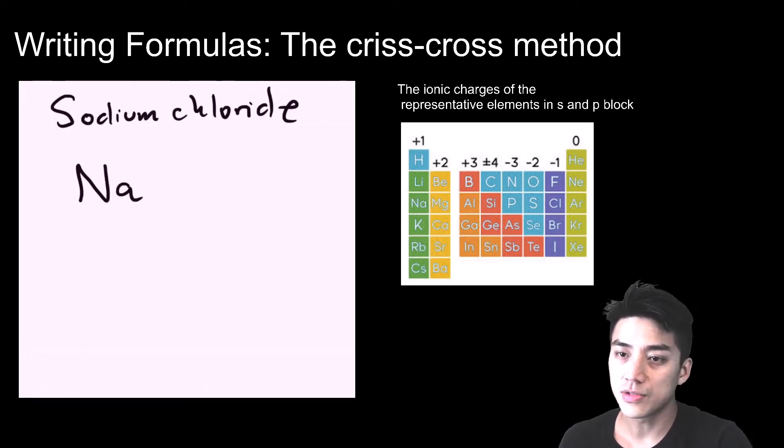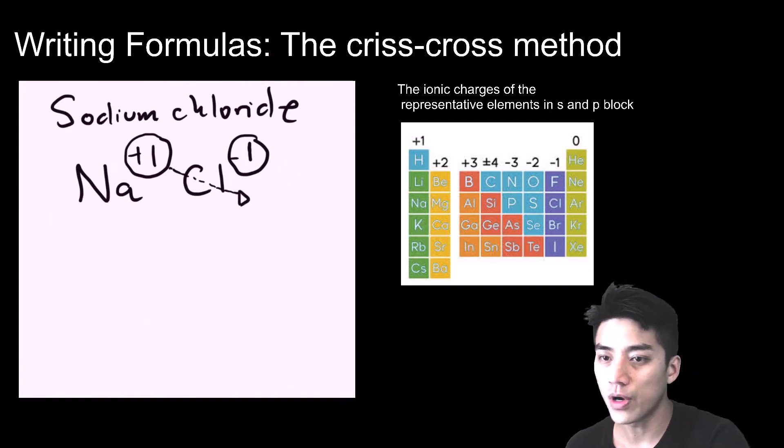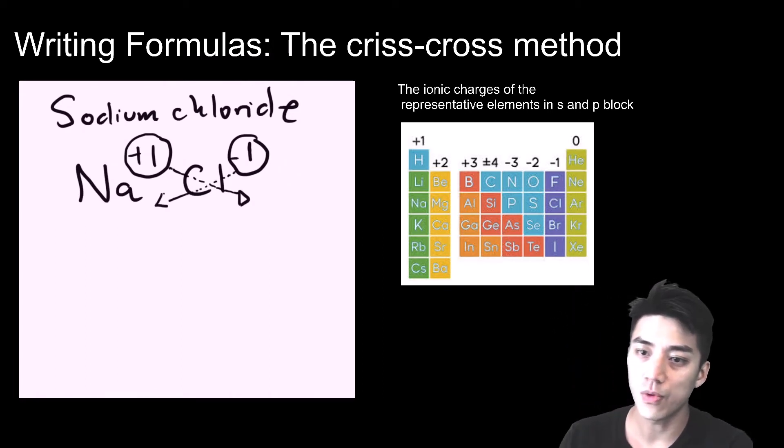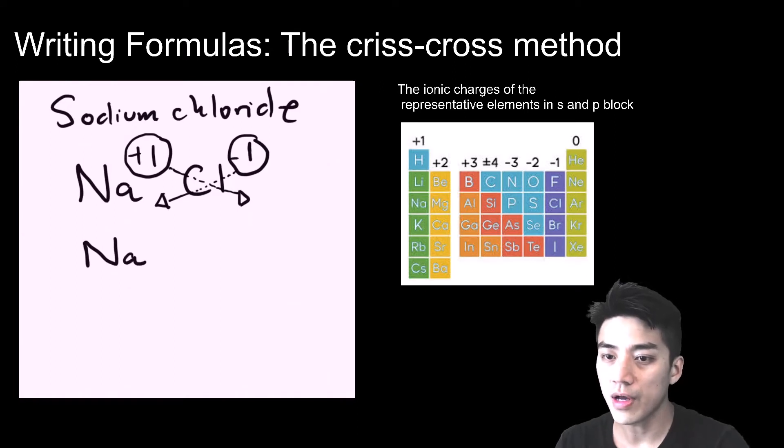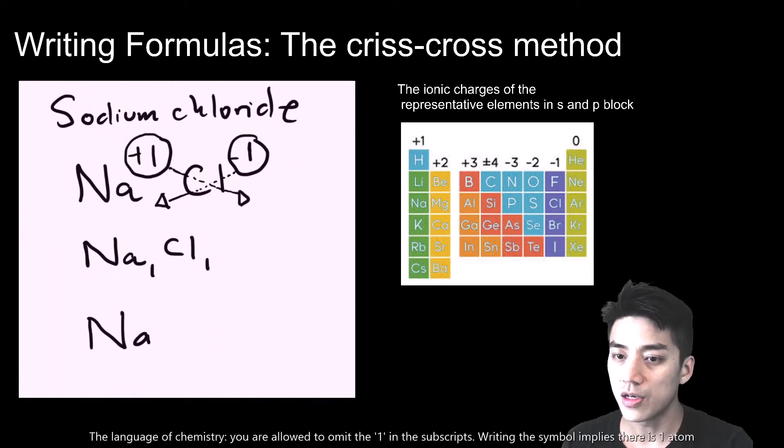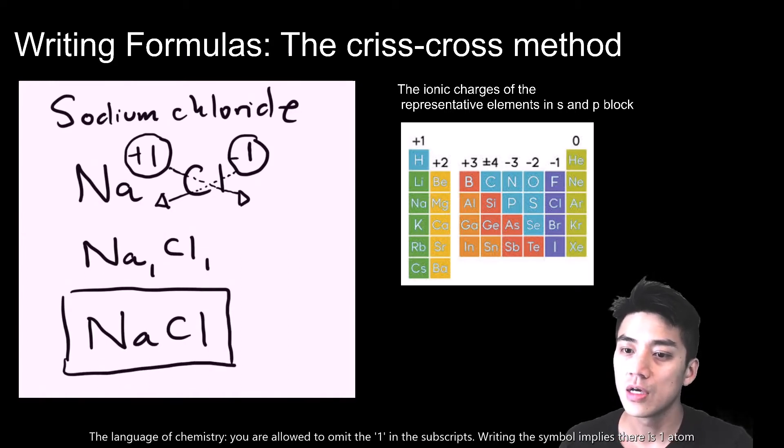Let's see this in action so that it's really clear. Sodium chloride: write out the formula, Na is a plus one charge, chlorine is a negative one charge, and now I just criss-cross. I'm gonna bring the one over to chlorine, I'm gonna bring the negative one over to sodium and now I rewrite their subscripts, ignoring their signs. It just becomes Na1Cl1 but then in chemistry remember you can omit the ones. It's the language of chemistry, so chemists get really lazy and we just omit the ones because it's implied. So we have Na1Cl1 rewritten as NaCl or sodium chloride.